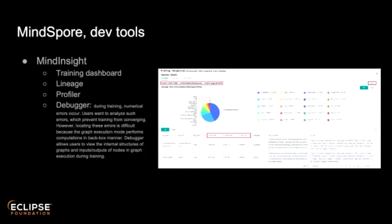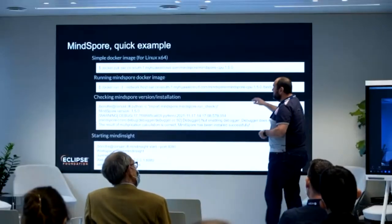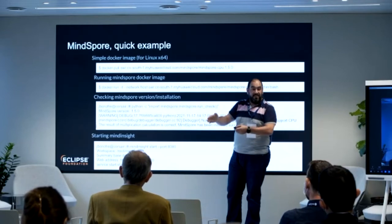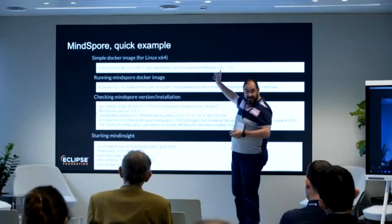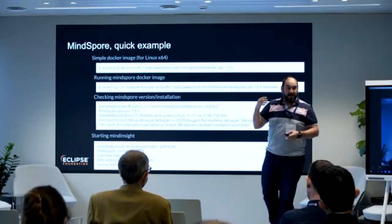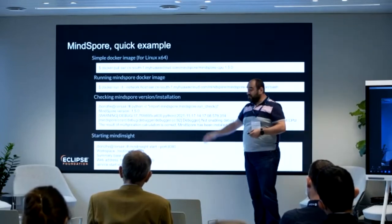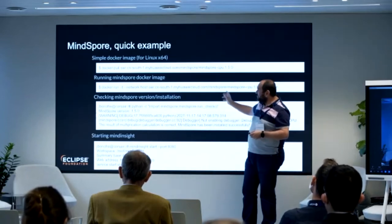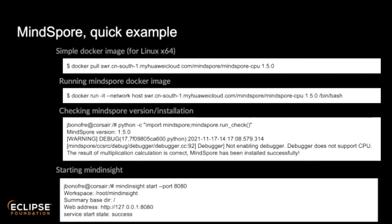Here's a quick example I ran on MindSpore — the code is on my GitHub if you want to download and try it. I used the MindSpore Docker image. Different Docker images are available depending on your hardware. I used MindSpore CPU since I was running on my laptop. You start the Docker image with a run command, and then you can verify your MindSpore installation with a simple Python import and check command, which shows the version and architecture.